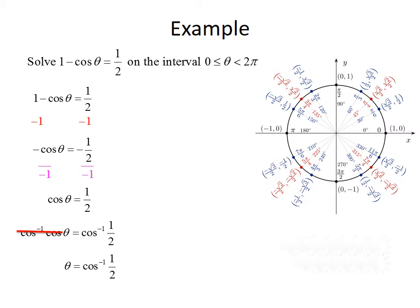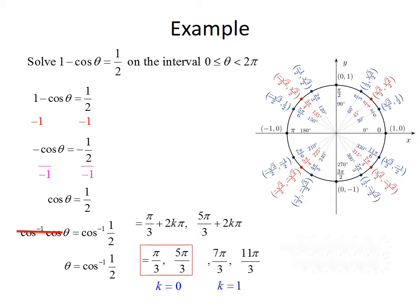The first value I see on the unit circle is π/3, and the second one is 5π/3. We write the general solution as π/3 + 2kπ and 5π/3 + 2kπ. When k equals 0 we get π/3 and 5π/3, which are both within our interval. When k equals 1 we get 7π/3 and 11π/3, but both are greater than 2π, so they are not included. Our overall solution is just π/3 and 5π/3.